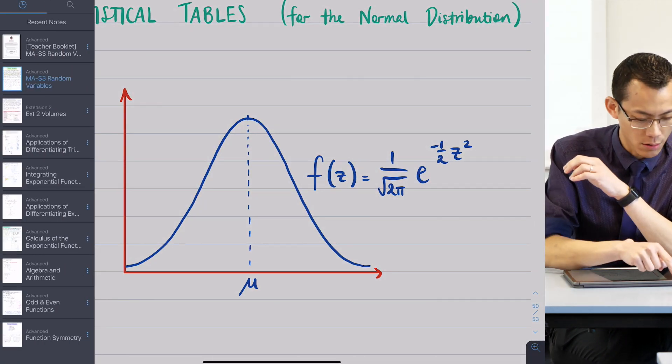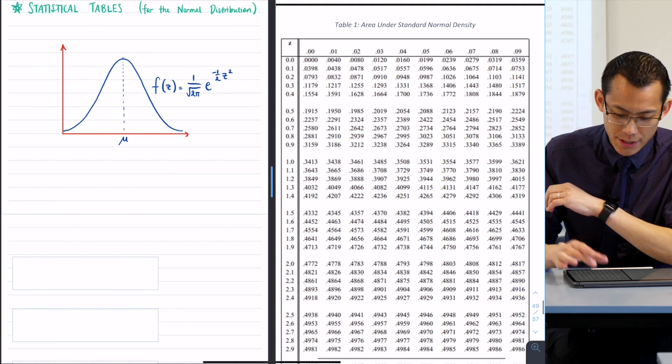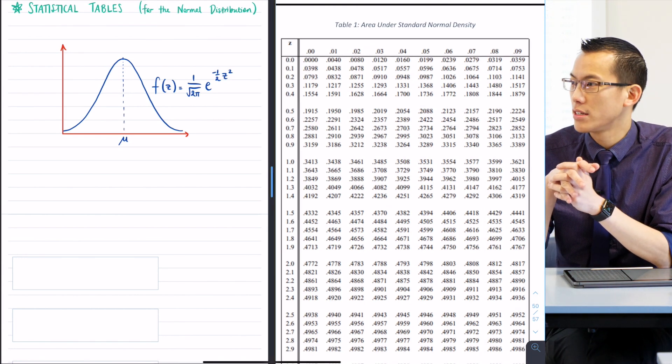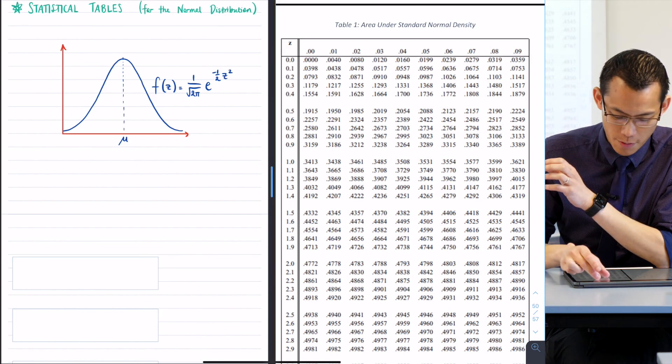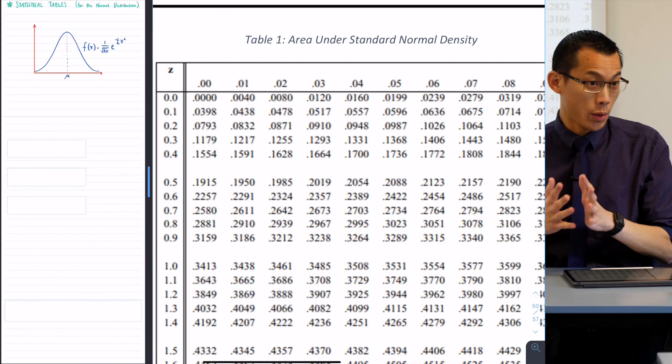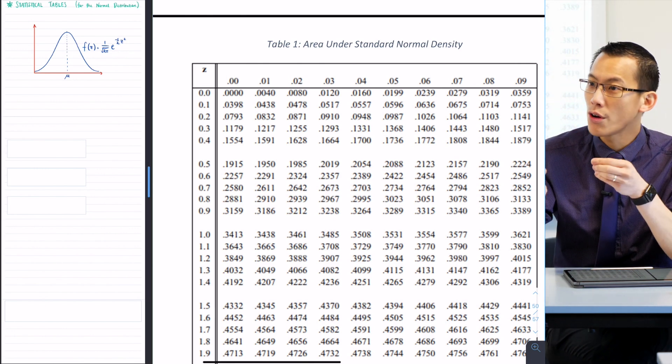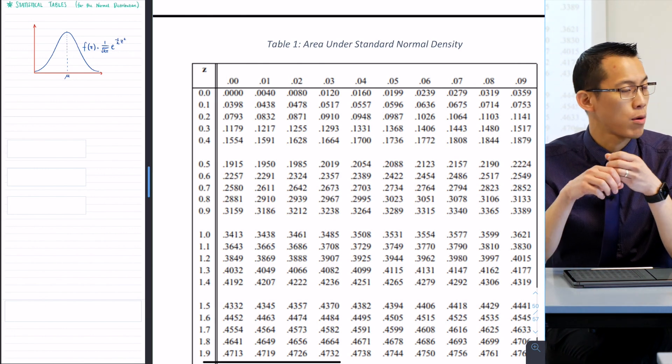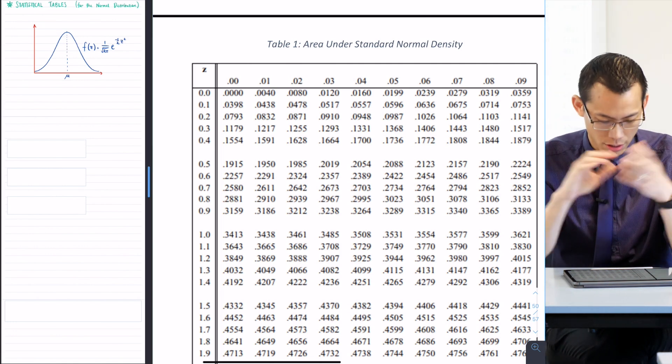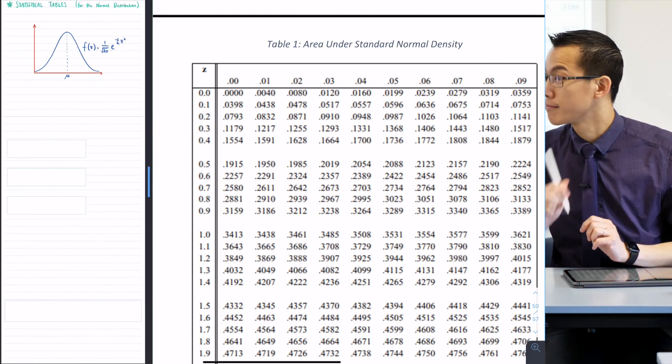So at this point, what I want you to do is to open up the booklet and the page number is page 50 and you're going to see a table here. It says table one, area under standard normal density. So I hope you can see it right there. I'll make it a little bit bigger for you. So what are we looking at? What do all these numbers mean? Essentially, if you know a particular z-score, you can work out a probability that goes with that like a cumulative distribution function would tell you.